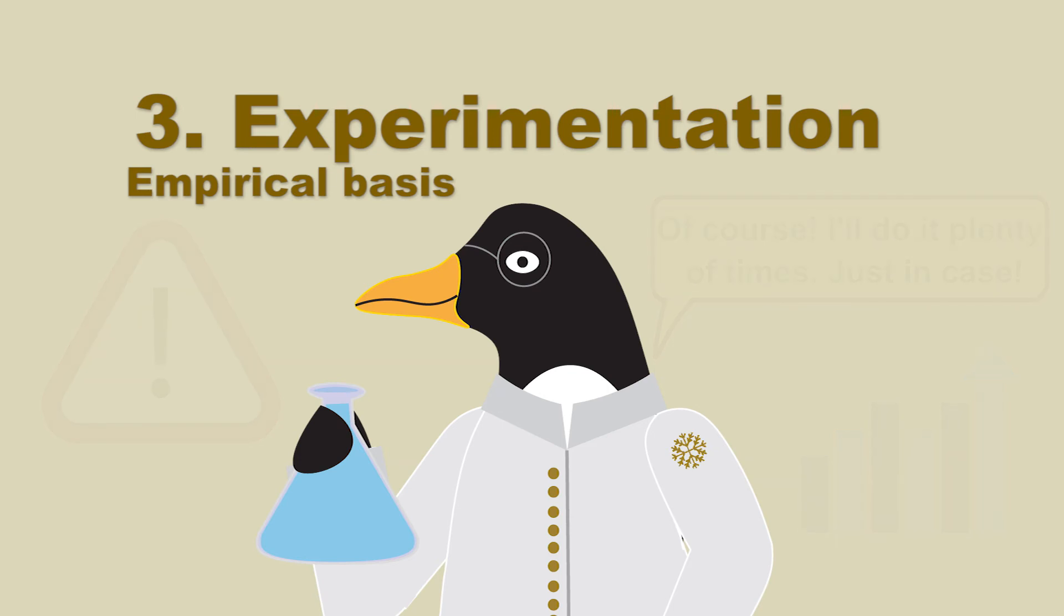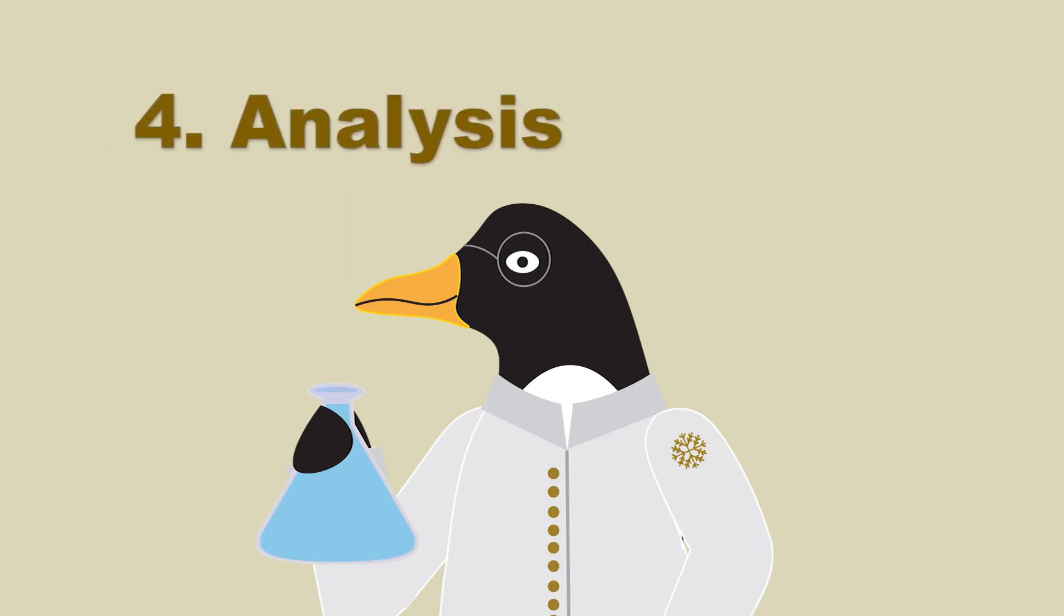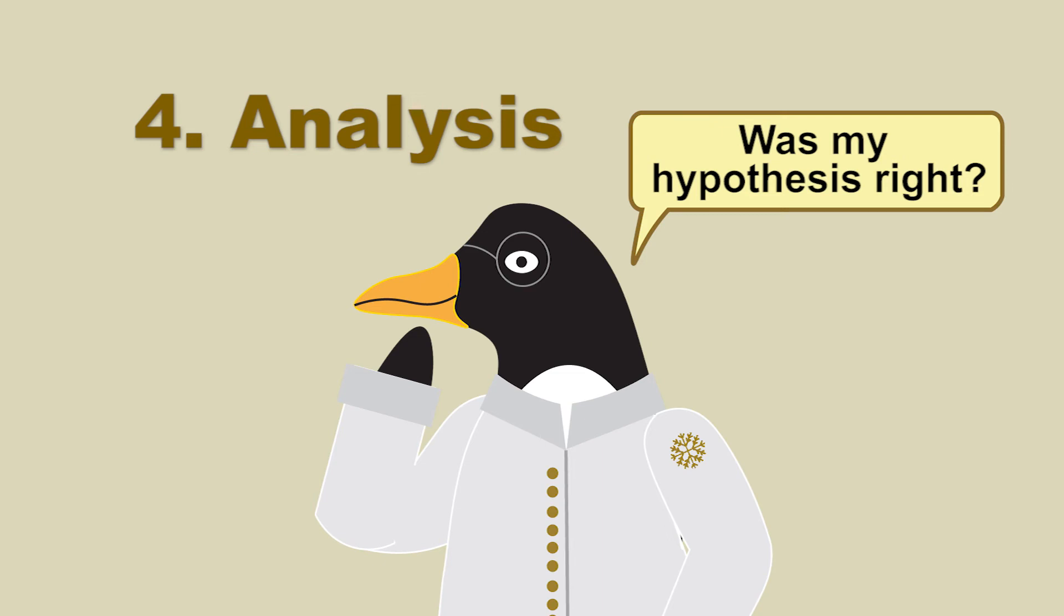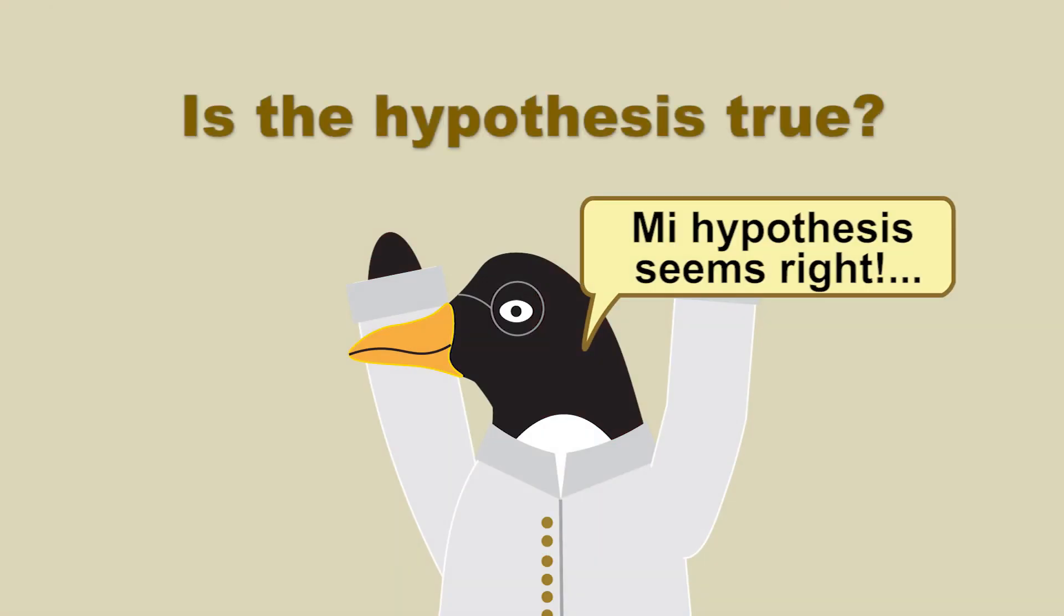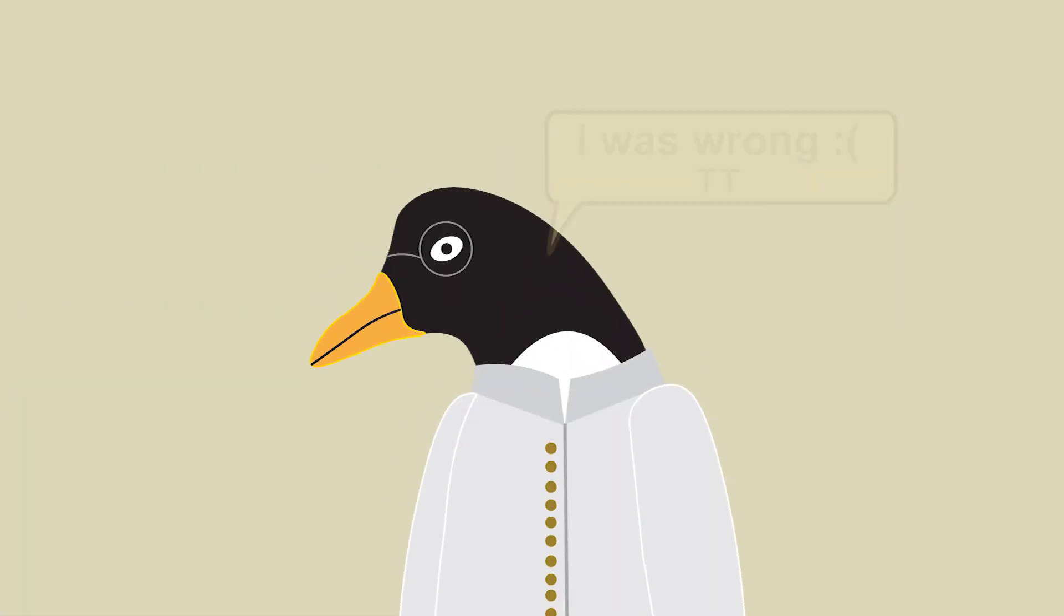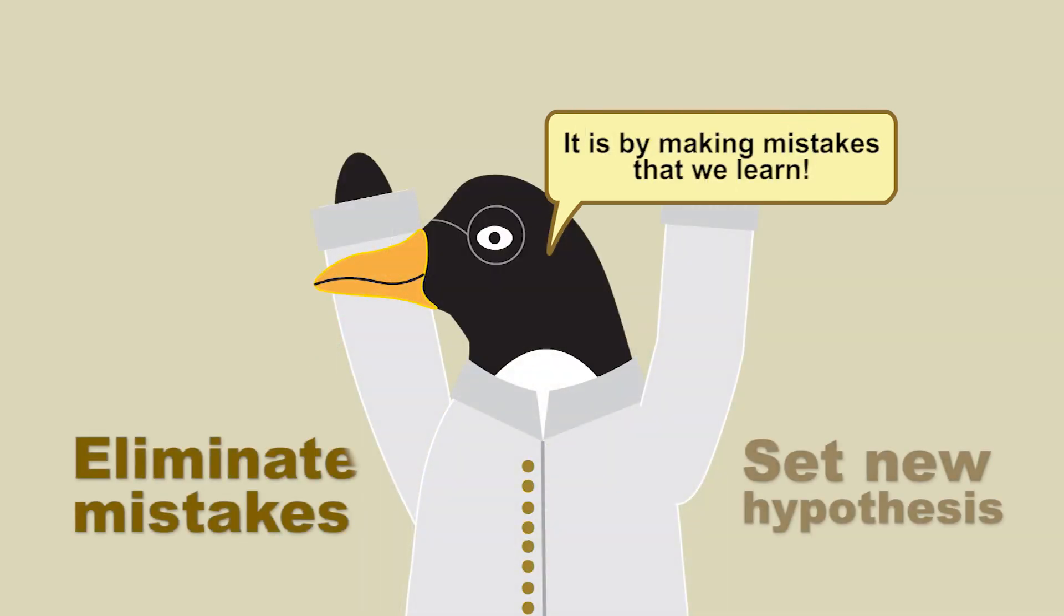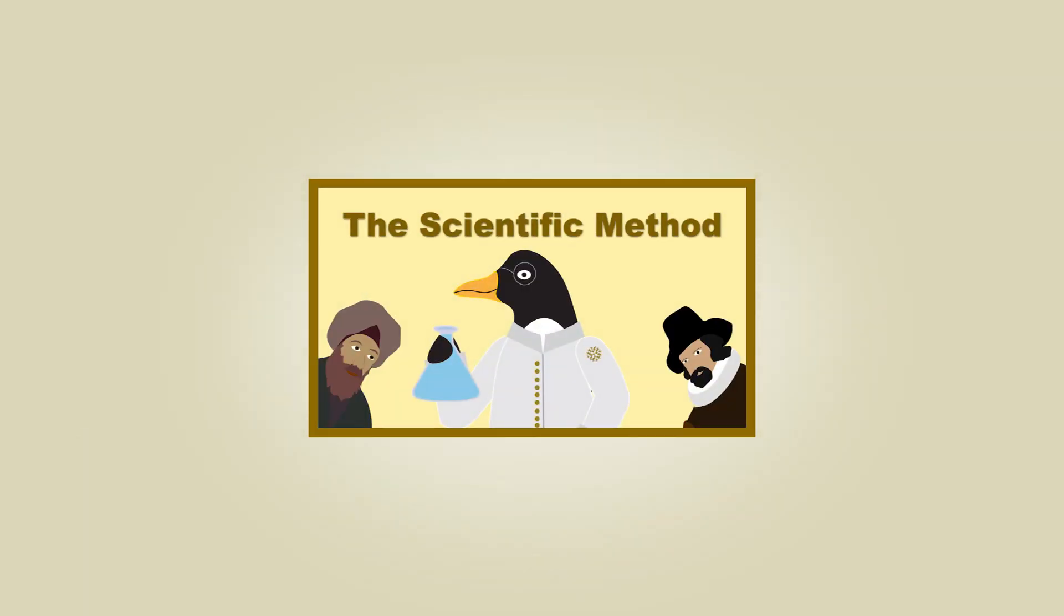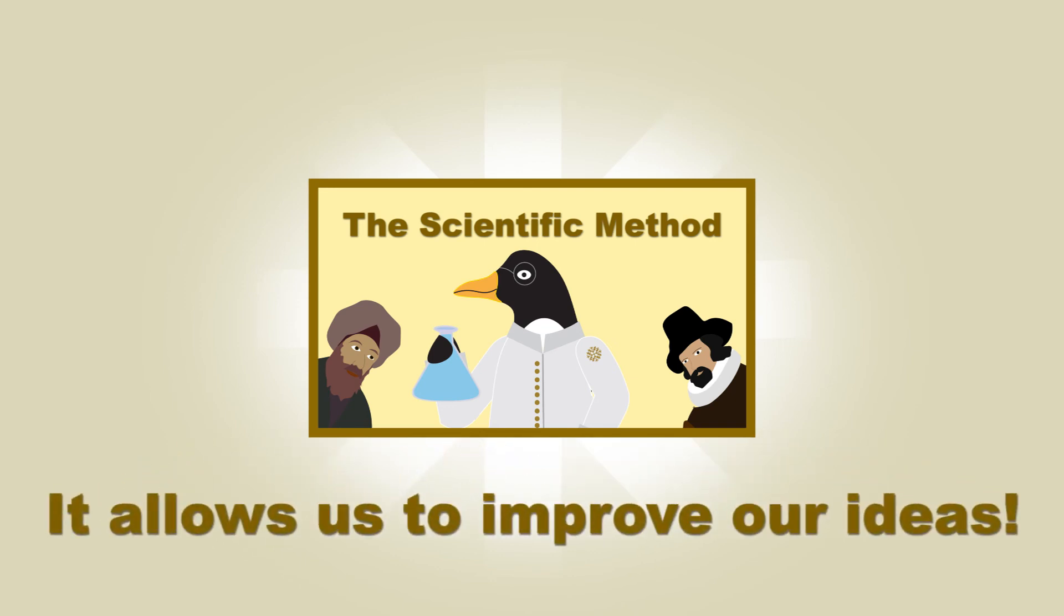Once the experiment has concluded, we should analyze the results to determine whether they support the hypothesis or not. This is the rational part. But now, the fact that the hypothesis was confirmed by the results doesn't mean that it is 100% true, but rather, it means that it is the most reliable explanation so far. If the results prove the hypothesis wrong, there is still some gain. We can eliminate the mistakes in our logic, develop a better hypothesis, and start over again. That's the wonderful thing about this method. There's no way to lose, and thanks to it, we can improve our ideas as time goes by.